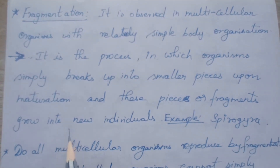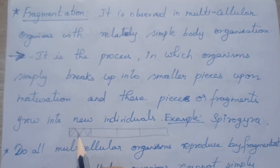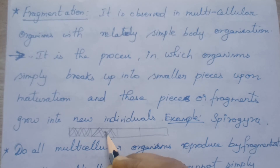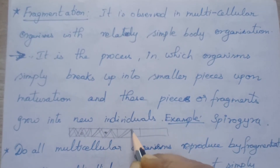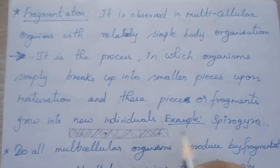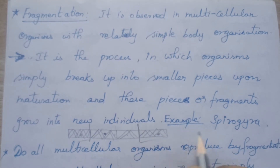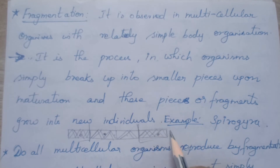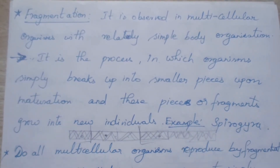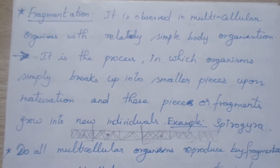The example is spirogyra. Spirogyra is a filament-like structure with a specific pattern visible under the microscope and has a nucleus. Once spirogyra matures, it splits into fragments — this segment separately, this separately, this separately. All these segments separate. Each small piece — 1, 2, 3, 4 — each piece grows and gives rise to a new spirogyra. This is called fragmentation.